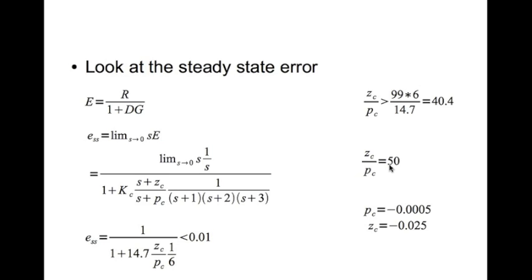Now I can choose pc. Now pc should be very near the imaginary axis so as not to affect the original root locus. If I select pc at -0.0005, you get zc at -0.025. These should be relatively close to each other and to the far right of the desired closed loop pole location.